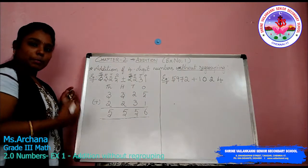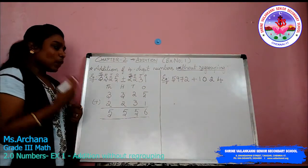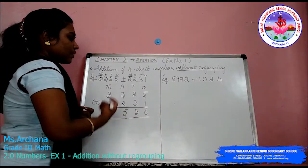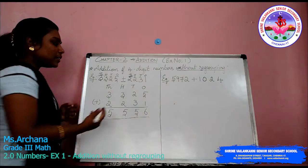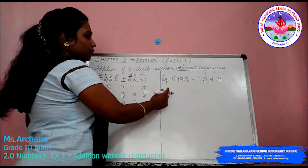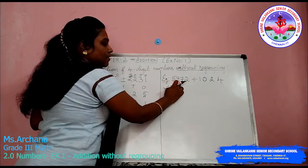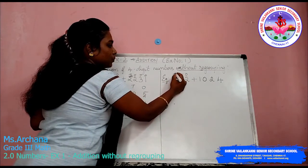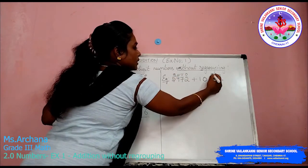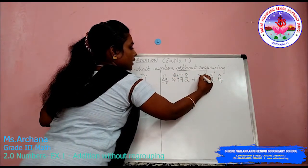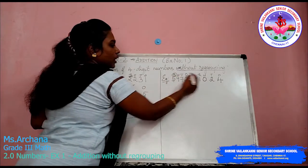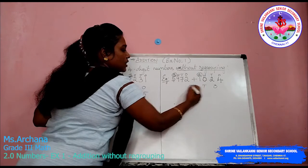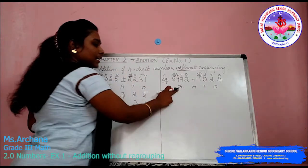After adding 2 numbers you will get a 1-digit number, so you don't want to regroup whatever answer you got. One more sum I will just show you: 5972. I told you to give the place value — 1s, 10s, 100s, 1000. First, which is the highest place value? 1000. So start writing the place values from 1s to 1000.